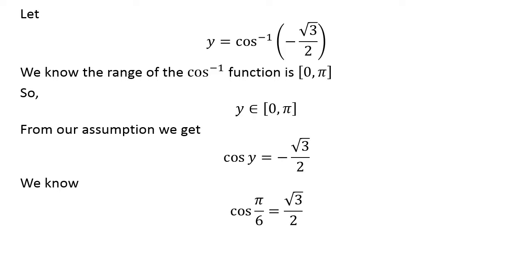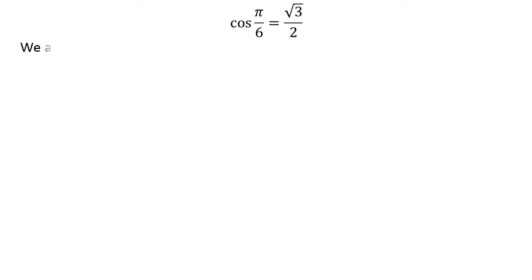We know cosine of pi upon 6 is equal to square root of 3 upon 2. We also know the trigonometry identity cosine of pi minus x is equal to minus cosine of x.